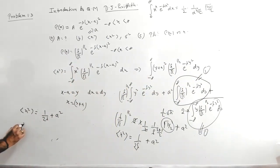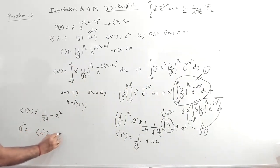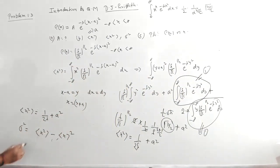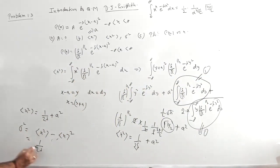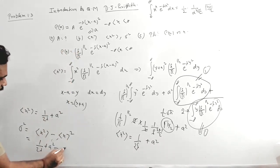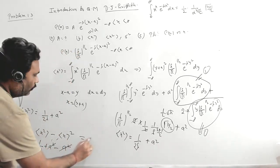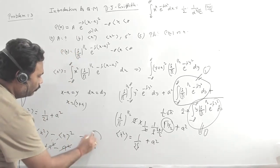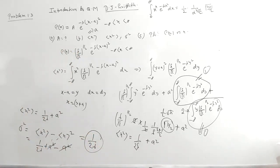Now, what is the variance? The variance σ² equals ⟨x²⟩ minus ⟨x⟩². So σ² equals 1/(2λ) + a² minus a², and the a² terms cancel, giving σ² equals 1/(2λ). This is the value of the variance.